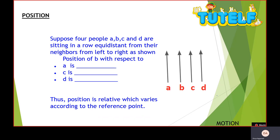First, we understand the position. Suppose there are four people, A, B, C and D, who are sitting in a row, who are at the same distance from their neighbors, from left to right. So A is left and D is right.